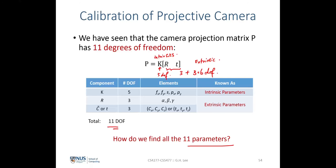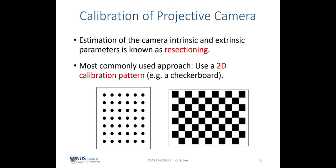The answer is through calibration, also very commonly known as camera resectioning. Resectioning means finding the parameters that make up the camera projection matrix — the intrinsics as well as the extrinsic parameters. One of the simplest and most commonly used approaches is calibration with a 2D calibration pattern, such as circles or more commonly a checkerboard pattern, which must be printed and pasted onto a flat planar board.